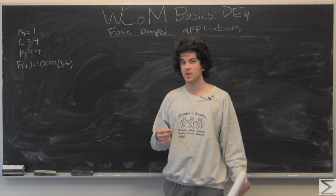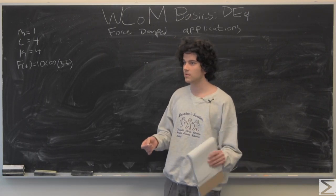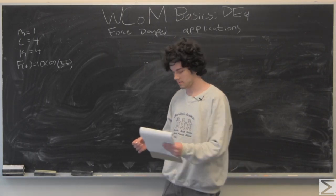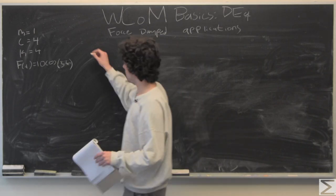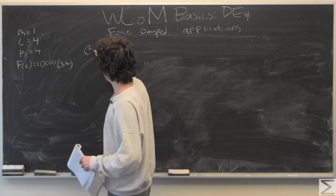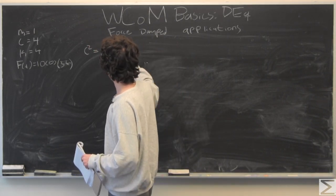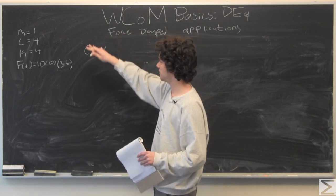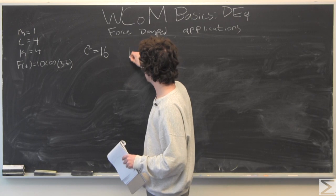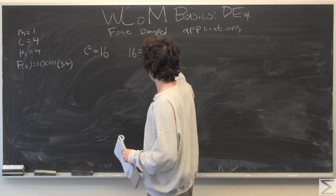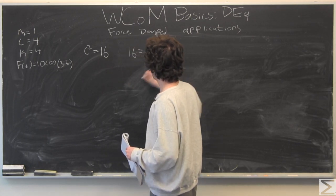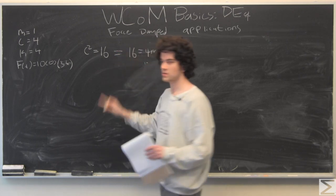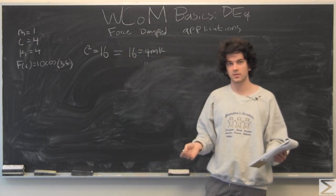The first thing we're going to want to do is to check how damped this system is. So c squared is equal to 16, and 4mk is also equal to 16. Since these two are equal, we have a critically damped case.